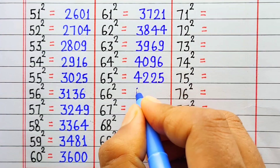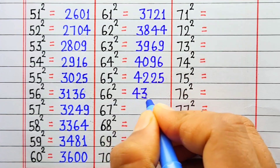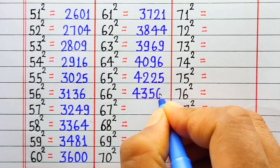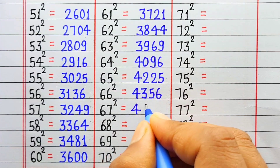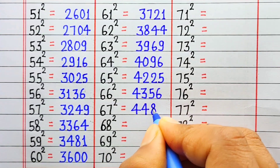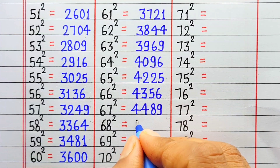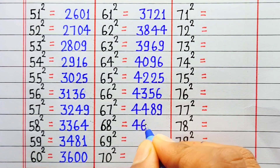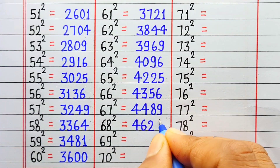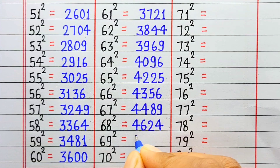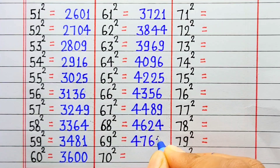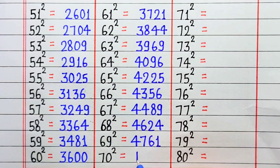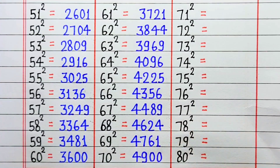Square of 66 is 4356. Square of 67 is 4489. Square of 68 is 4624. Square of 69 is 4761. Square of 70 is 4900.